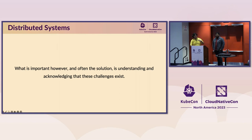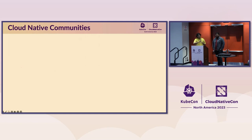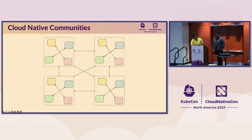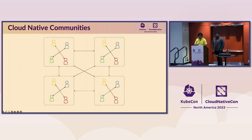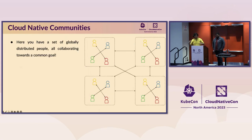Once you accept that these are challenges with physical limits you cannot overcome, you start innovating around them and building systems that are resilient to them. So we've talked about distributed systems, but let's start talking about cloud-native communities.